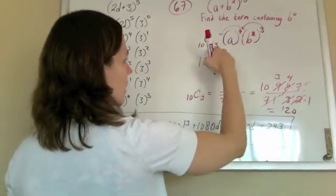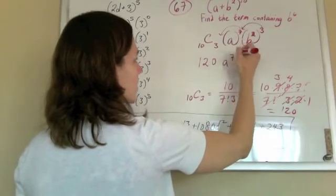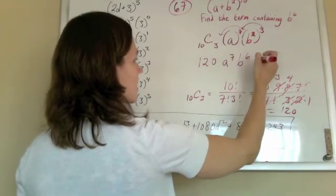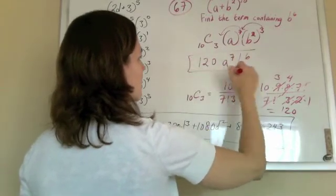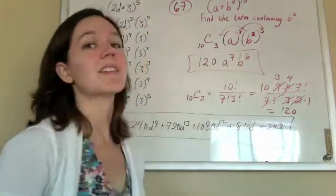So you should just have 120 a to the 7th b to the 6th. And that is the term containing b to the 6th. Thanks.